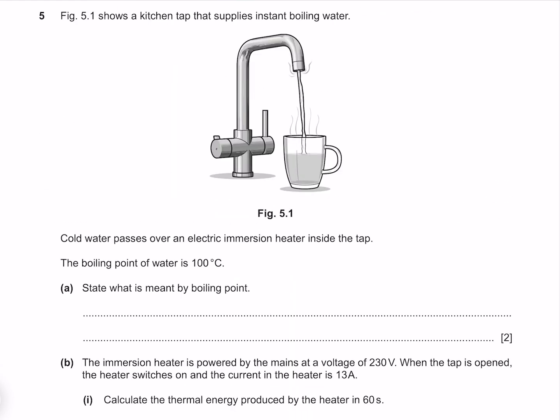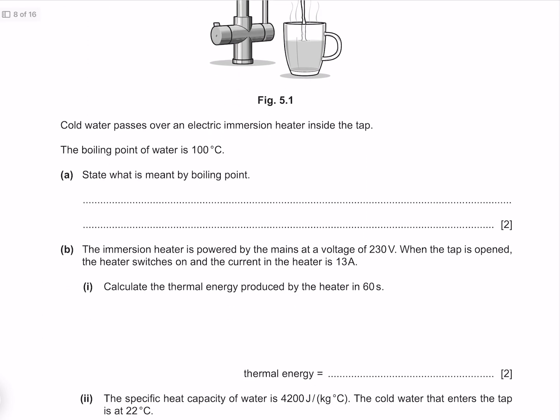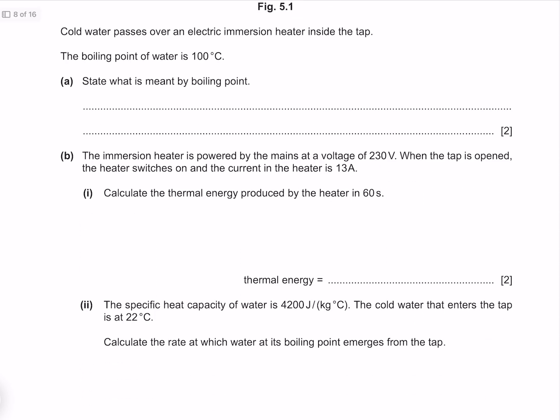Figure 5.1 shows a kitchen tap that supplies instant boiling water. Cold water passes over an electric immersion heater inside the tap. The boiling point of water is 100 degrees Celsius. State what is meant by boiling point. This is the temperature at which a substance transitions between liquid and gas.